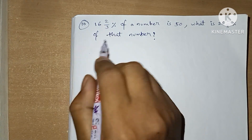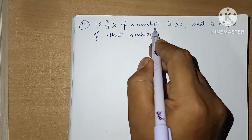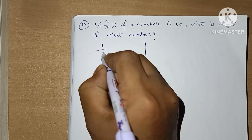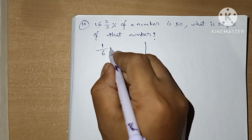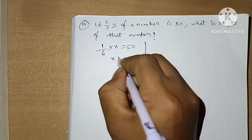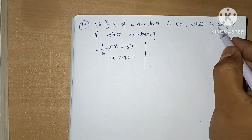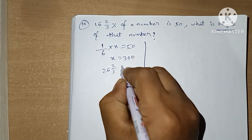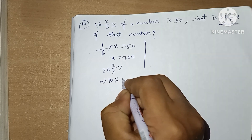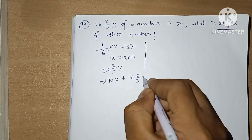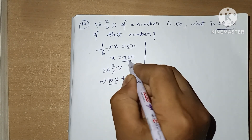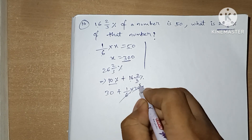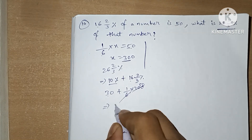Question 10: 16⅔% of a number is 50. 16⅔% is 1/6, so 1/6 of x equals 50, giving x equals 300. Now find 26⅔% of 300. We split this as 10% plus 16⅔%. 10% of 300 is 30, and 1/6 of 300 is 50. So 30 plus 50 equals 80. Our answer is 80.